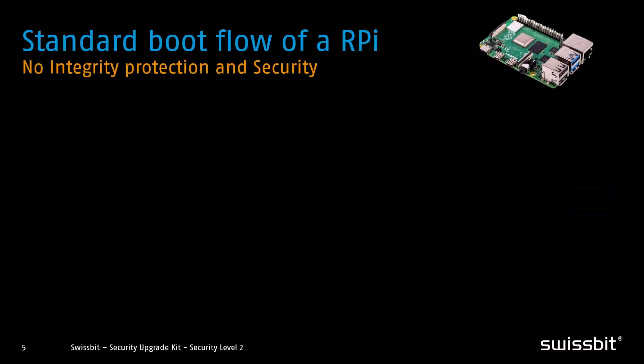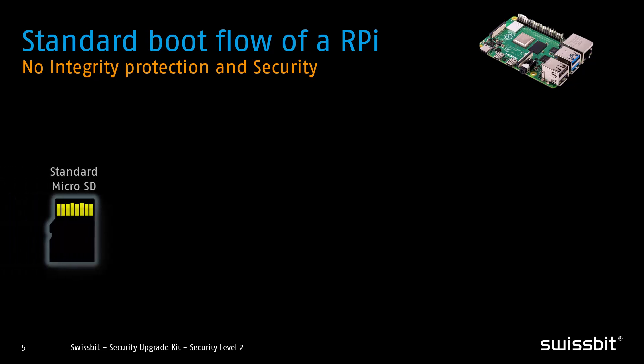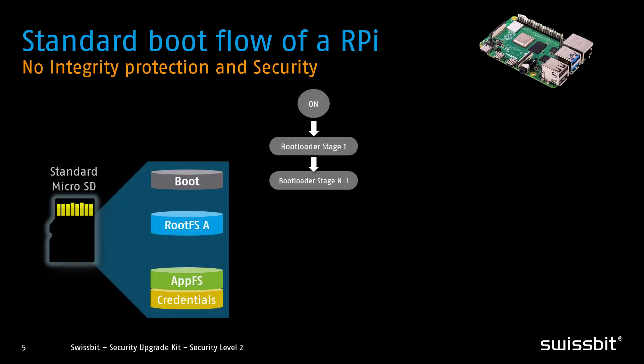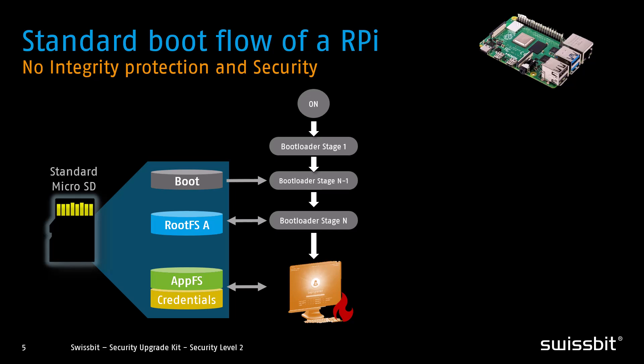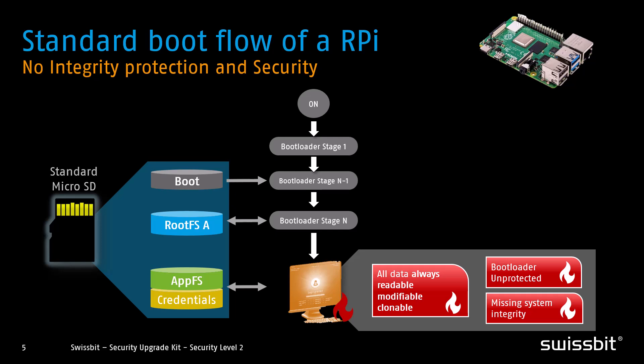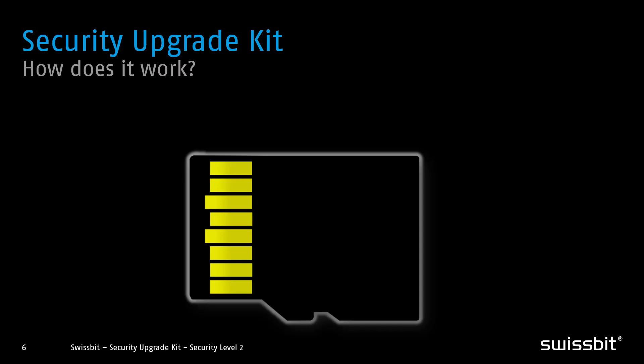Let's look at the standard Raspberry Pi boot process when using a regular micro SD card. All partitions — such as the boot partition and root file system — are always accessible. The Raspberry Pi starts by reading the bootloader from the boot partition, then boots the kernel and loads Linux from the root file system. But this setup is not secure: the data on the card could be tampered with either during production or while in use, bootloaders aren't protected, and system integrity isn't guaranteed. However, there is a solution to this.